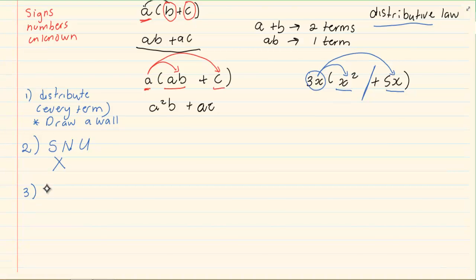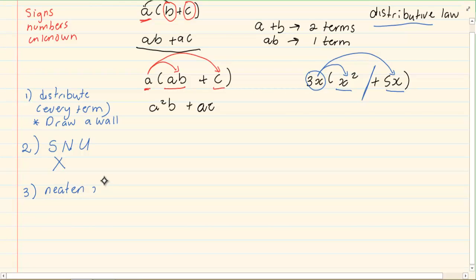Last, when you are neatening off, then you are going to also use your signs, numbers and unknowns. But then you are using your addition and subtraction rules.